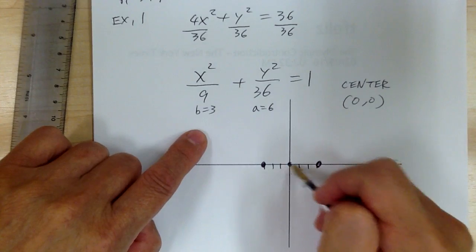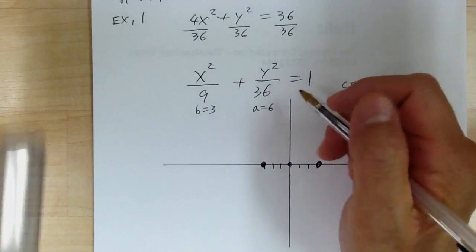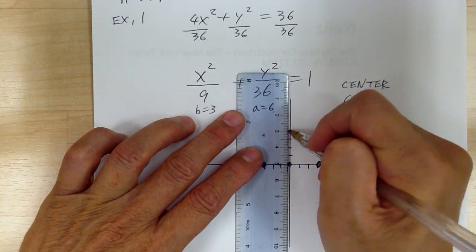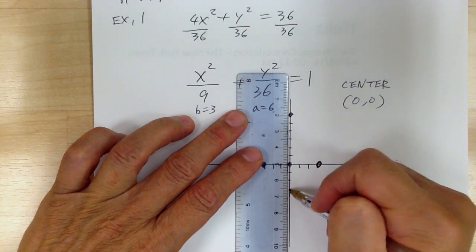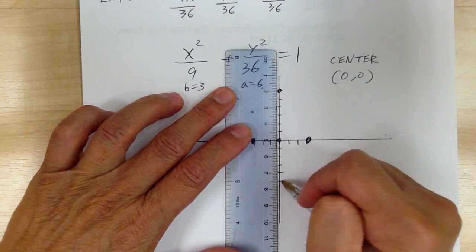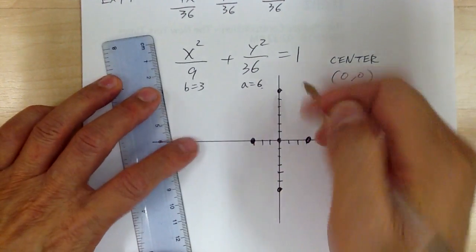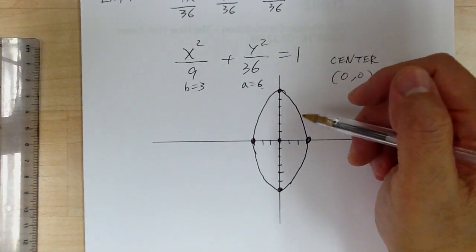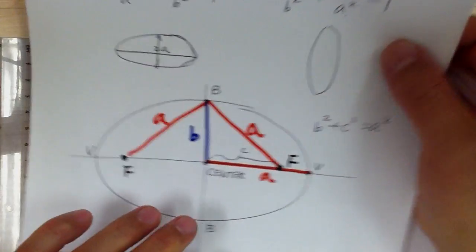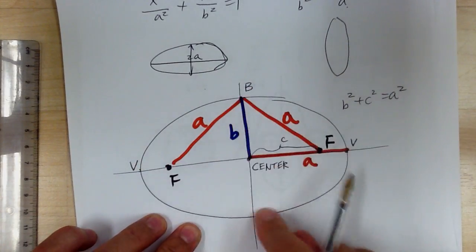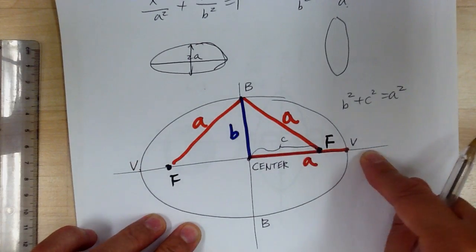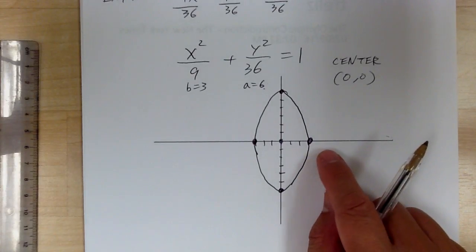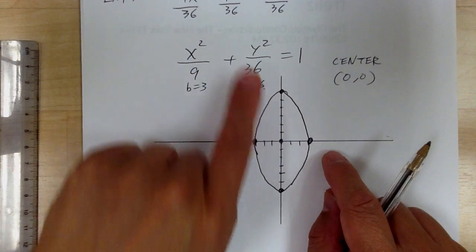Since b equals 3 and it's from the x term, you go 3 in the x direction both ways. Then you go 6 in the y direction from the center. Everything is measured from the center. That gives you your ellipse. The big number is under the y, so the axis of the ellipse runs vertically. For the ellipse, the focus is always on the long axis — never on the short axis — so the focus is in the y direction.